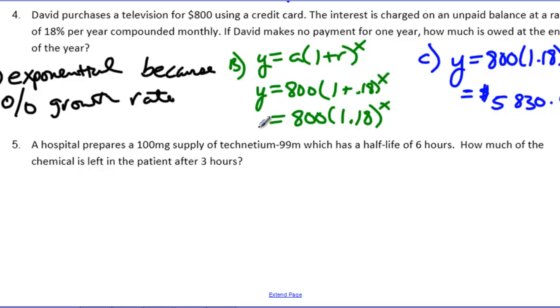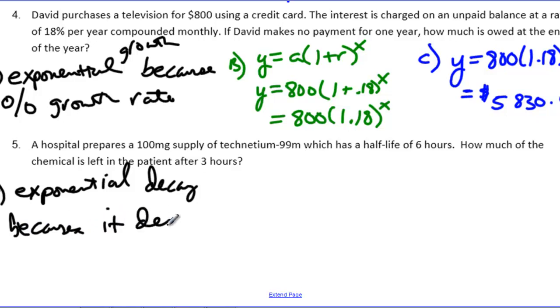Last one: a hospital prepares a 100 milligram supply of technetium-99 which is a certain drug they use to treat cancer, and it has a half life of 6 hours. How much of the chemical is left in the patient after 3 hours? Obviously we're dealing with exponential decay here. I probably should have said that up here that this was growth and this is decay because the drug in the person's system is getting smaller, it's being cut in half. Exponential decay because it decreases by one half every 6 hours. Be careful with this 6 hours piece.